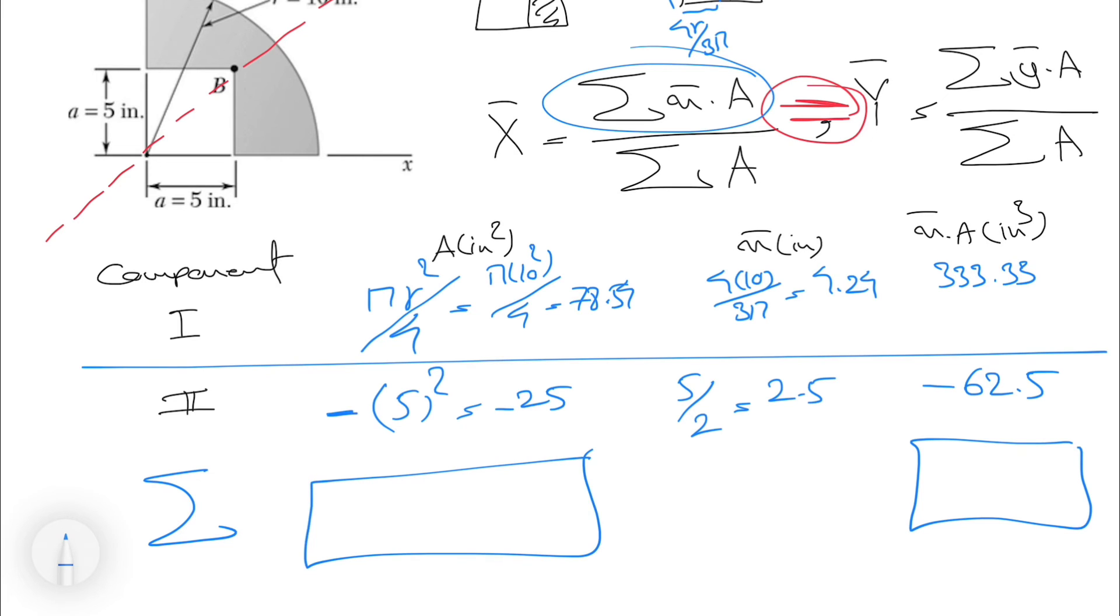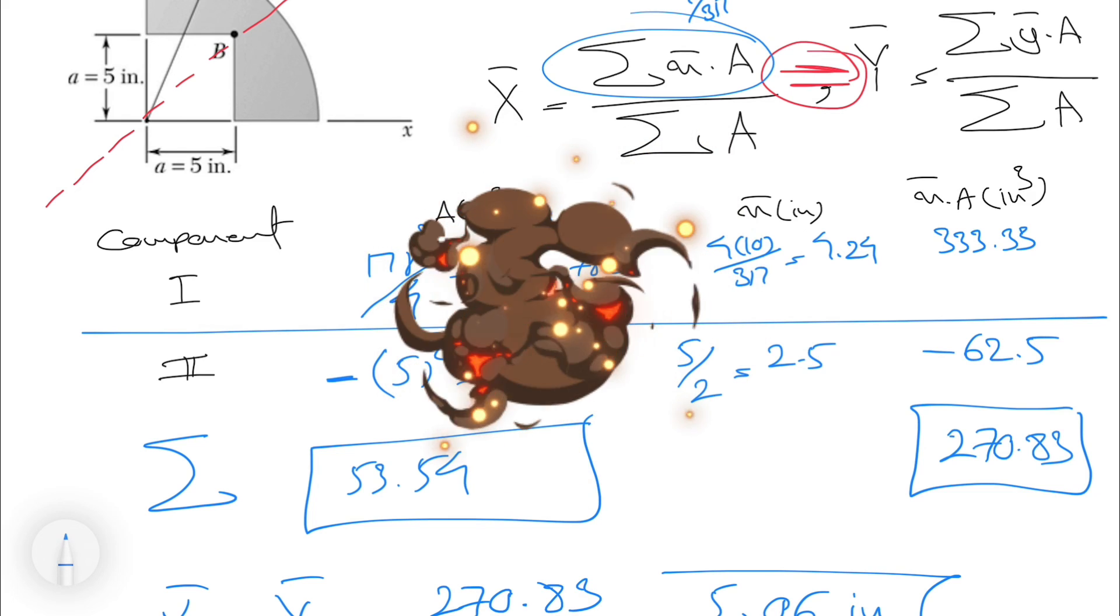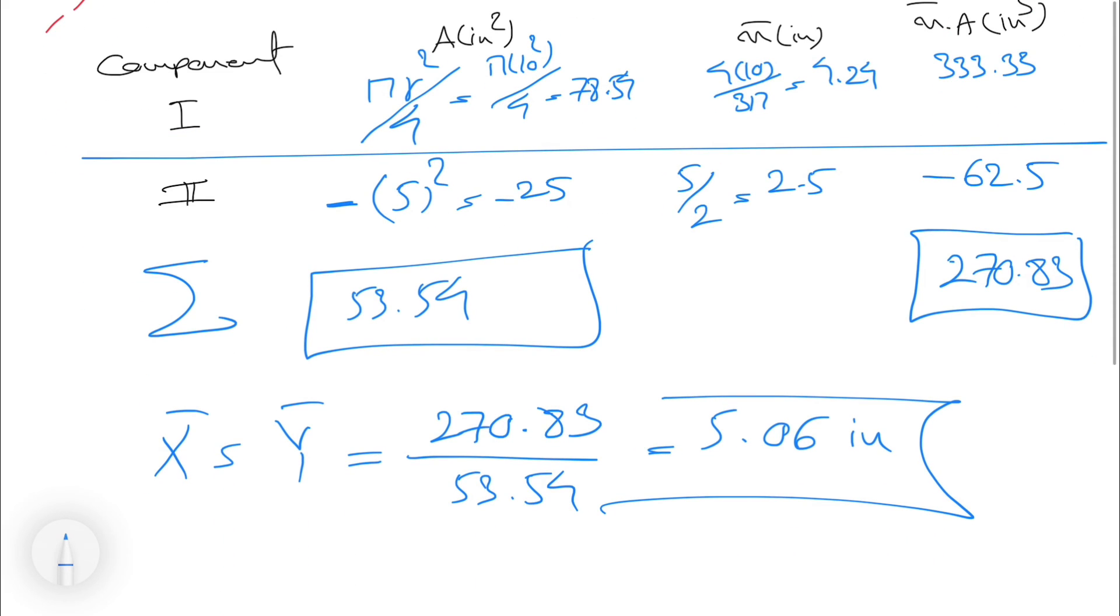That's the last row. What we need in the formula is the numerator of the fraction, which is what we have in here, and the denominator will be the sum of all the areas. If we calculate those, we'll get 53.54 for the area and 270.83 for the last column. As I mentioned, we know the x and y components are the same because of the symmetry of the shape. We'll simply have 270.83 divided by 53.54, which would give us 5.06 inches. So again, because of the symmetry of this figure, we have the same x and y, and we don't need to calculate each separately.